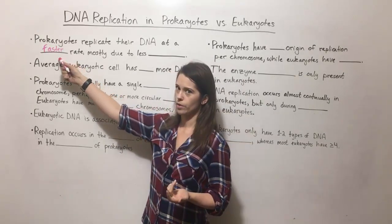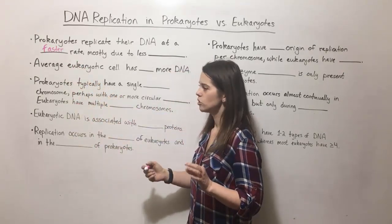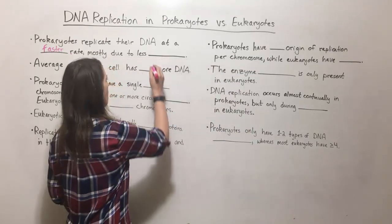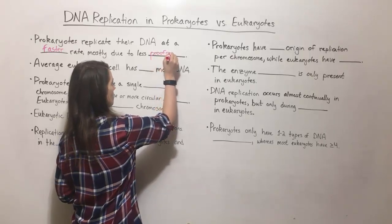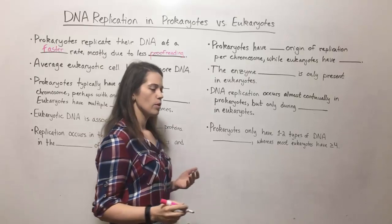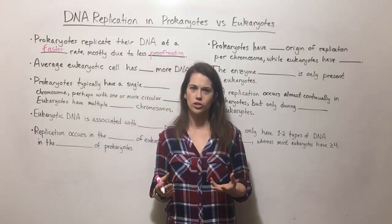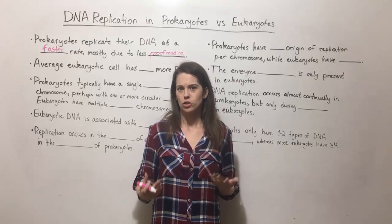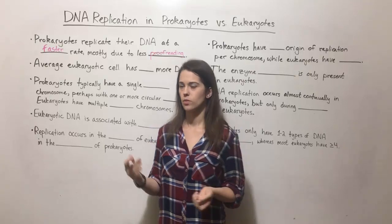You might ask why prokaryotes are so much faster. A lot of it has to do with the fact that they do less DNA proofreading. In other words, prokaryotes spend less time double-checking to make sure that their DNA was replicated faithfully, which means that they also have higher mutation rates than eukaryotic cells.